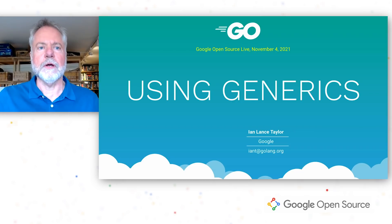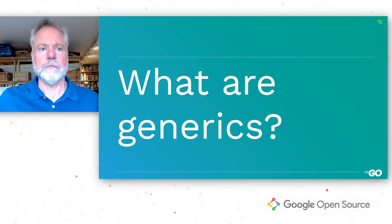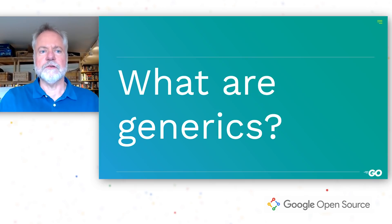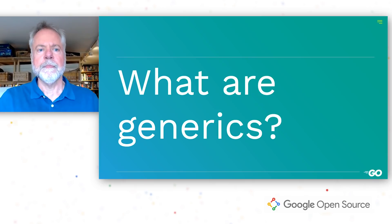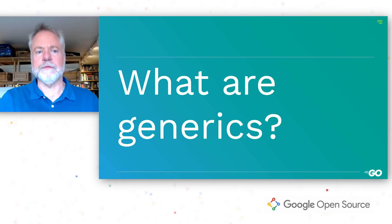What are generics? Generics let you write data structures and functions with types that are specified later. In current Go, functions have parameters. With generics, functions can have a new kind of parameters called type parameters. And types, which currently can't have any kind of parameters, can also have type parameters.